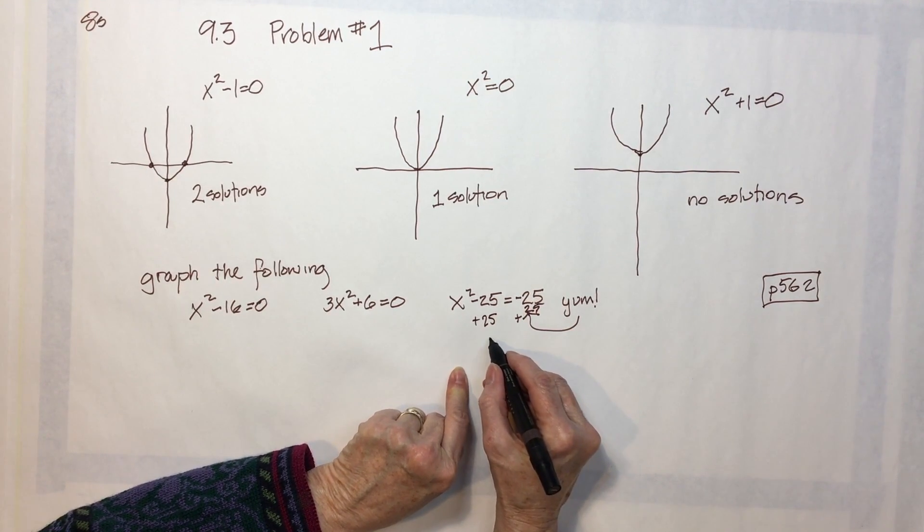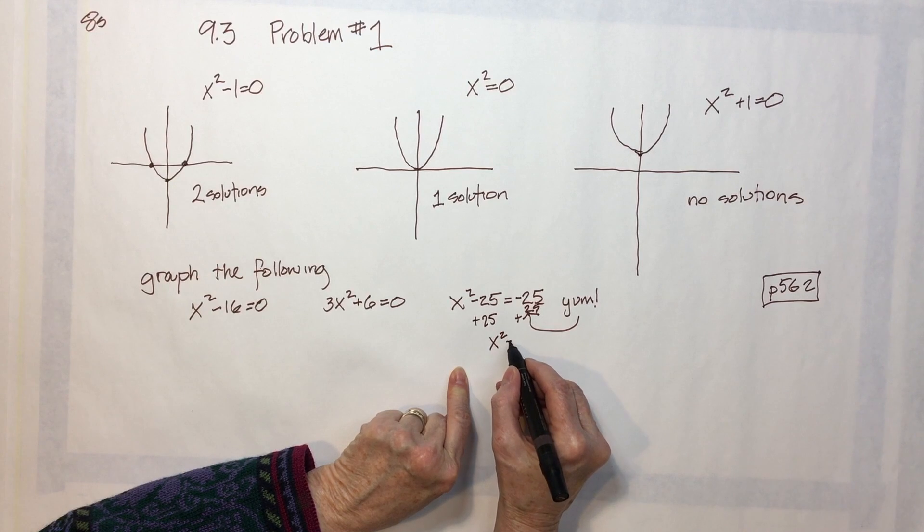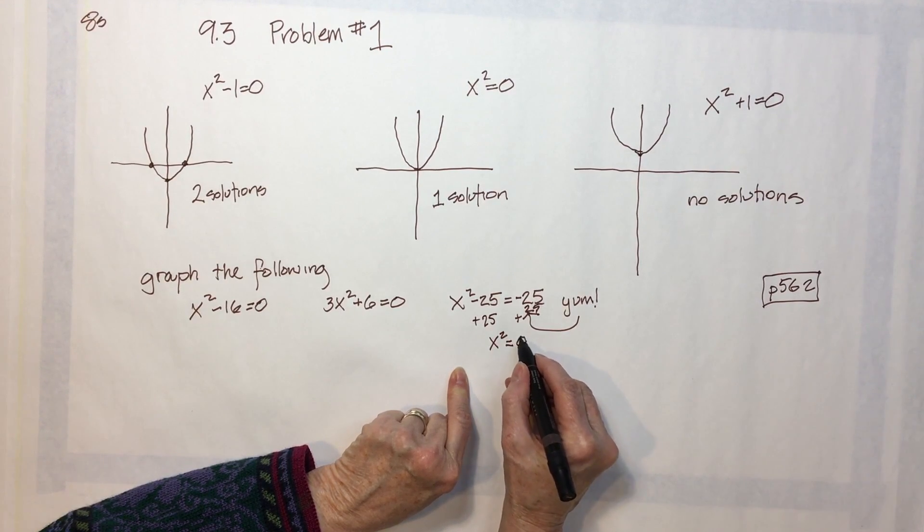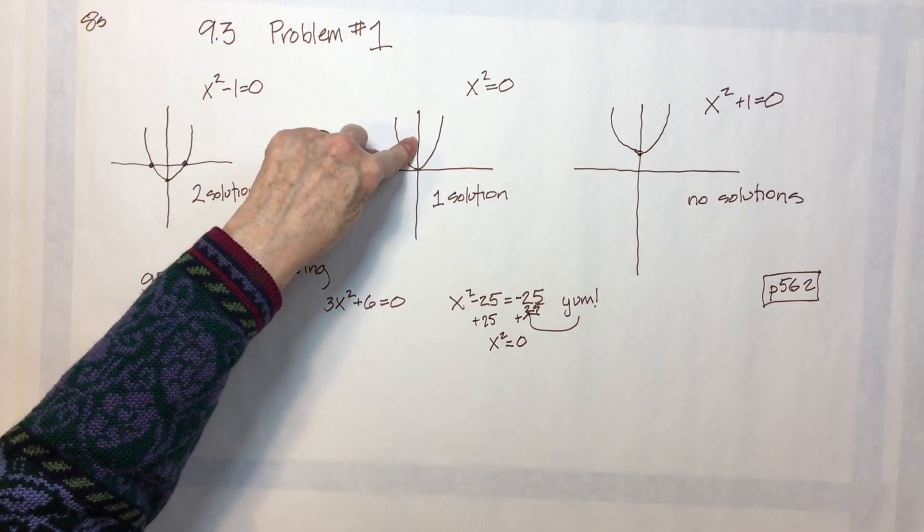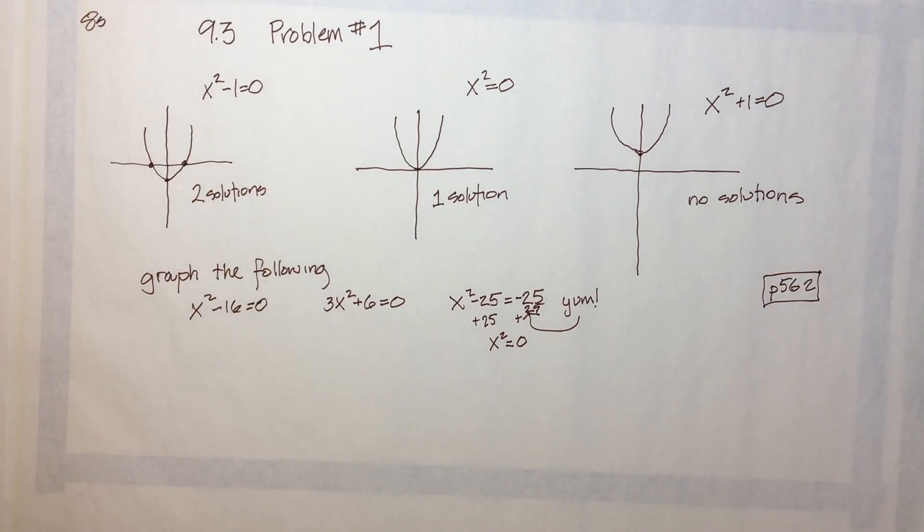And that gives me x equals zero. X squared equals zero. So I guess that must correspond to this one, which gives me one solution.